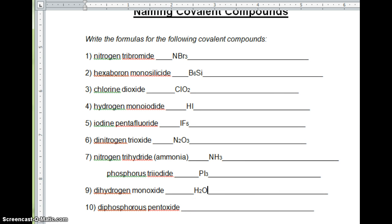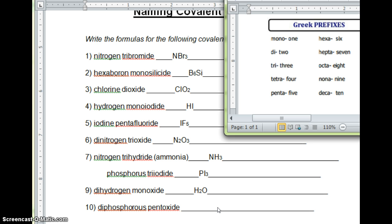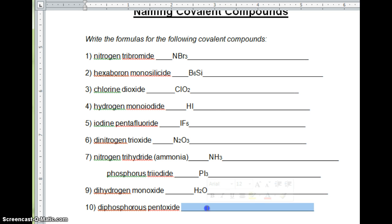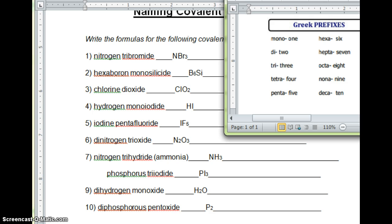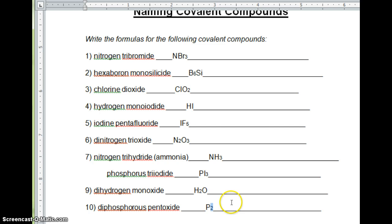And diphosphorus pentoxide. Diphosphorus. So I write the phosphorus. And how many were there? Di means two. P2. And then I have pentoxide. Pent means how many? Five. And oxide is what element? It is going to be O. So I have diphosphorus, two phosphorus. Pentoxide. Five oxygens. P2O5.